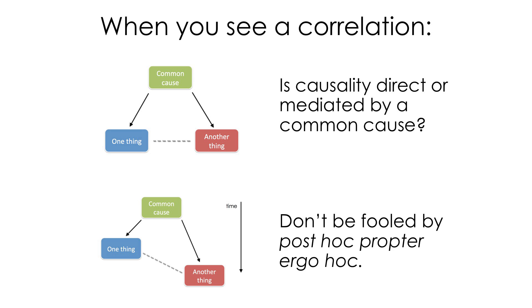Always consider that the causality could be reversed or we could have kind of a looping cycle. Is causality direct or is it mediated by a common cause? So just because two things are correlated, as we saw with a number of the examples, the storks and the birth rates, for example, they may not have any direct causal relationships. But there's this outside common cause that's determining both. And related to that, don't get fooled by this post hoc propter ergo hoc.